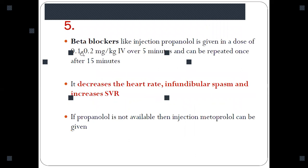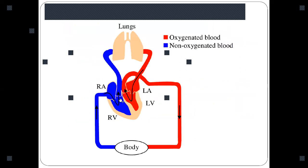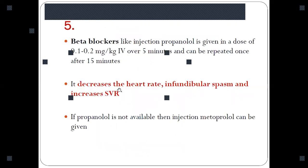Beta blockers is a fifth line of choice, whether injection propranolol. Beta blockers decrease the heart rate and also the infundibular spasm. Because of the infundibular spasm, there is increased right ventricle outflow tract obstruction. If you relieve this spasm, the blood can go from right ventricle to the pulmonary artery rather than going to the left ventricle, so it is very useful.